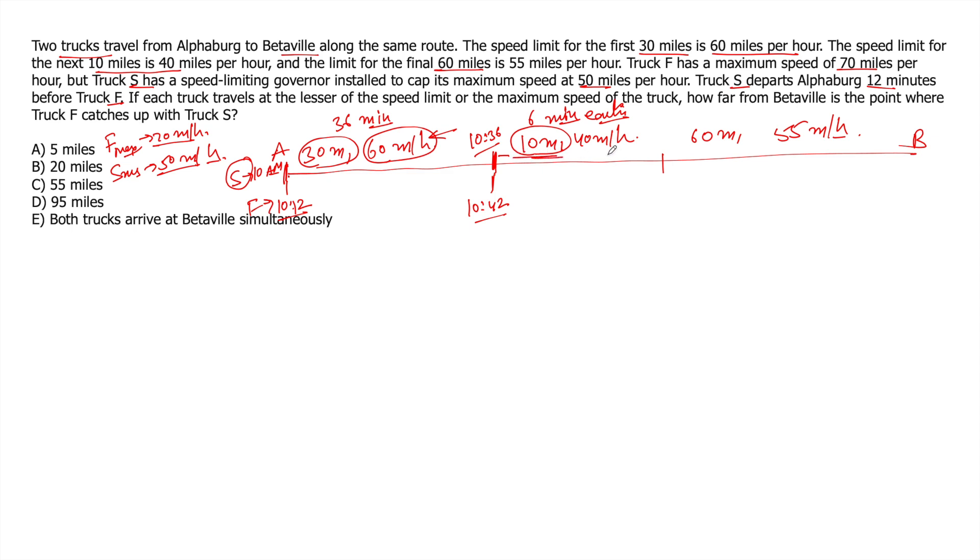So for this 10 miles, the speed limit is 40 miles per hour. It's less than the maximum of both. So both will travel at 40 miles per hour along this route. So we don't need to calculate anything. Both will take same amount of time to cover this particular part.